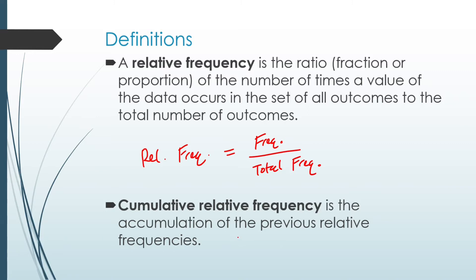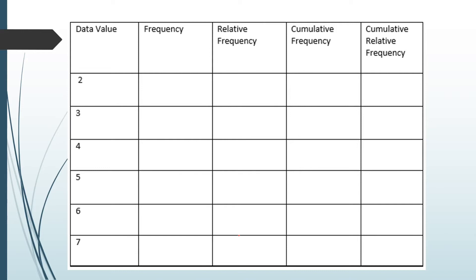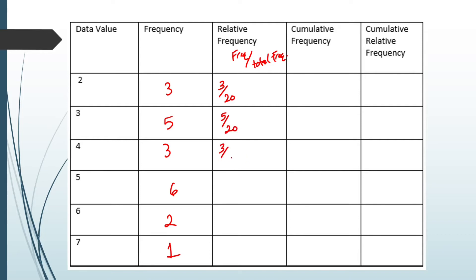Let's look at an example with these definitions, using the same values from our previous example. To calculate the relative frequency, we find the frequency and divide it by the total frequency. We take the 3 and divide it by 20, then the 5 divided by 20, and continue through the entire column, taking each frequency and dividing by the total. This represents our relative frequency column.